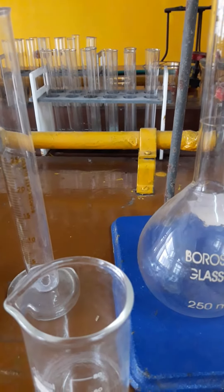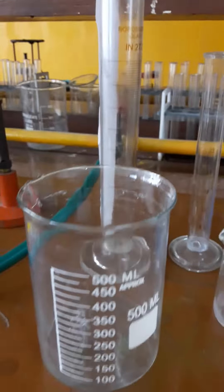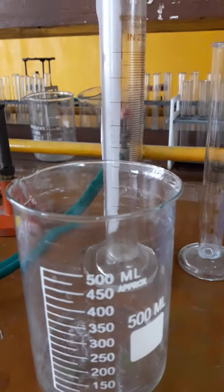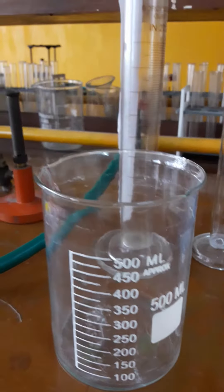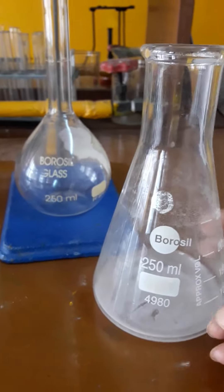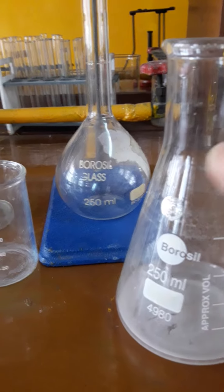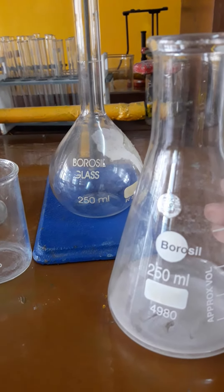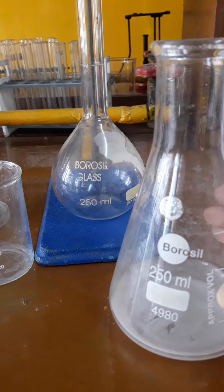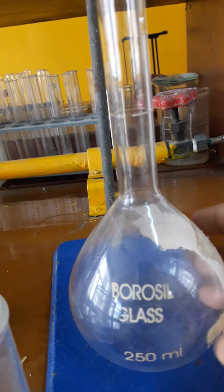In the chemistry lab you can see some measurement apparatus. These are all for the measurement of liquid. This is a conical flask, here you can see the measurement is written over 250 milliliter. If you want to measure the liquid we can measure it by this.